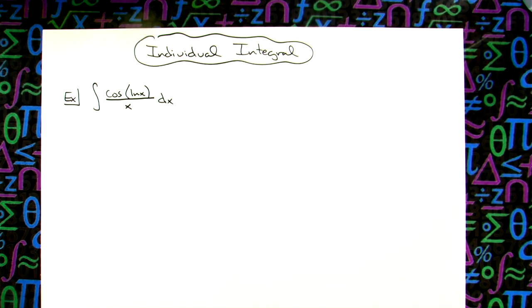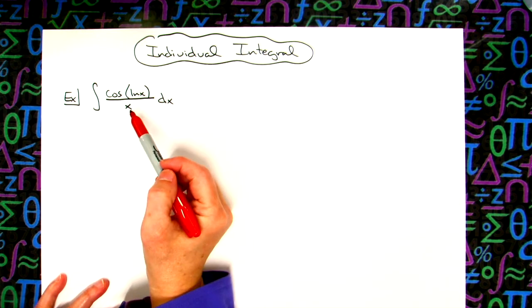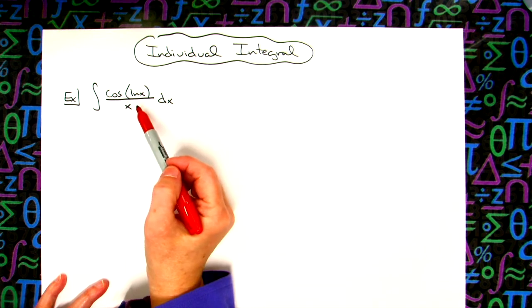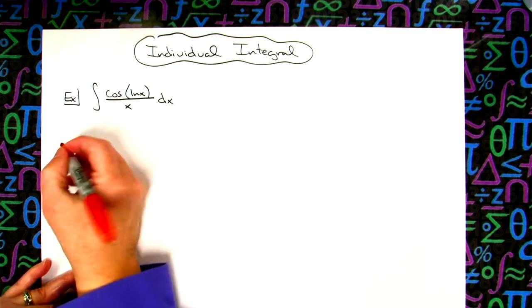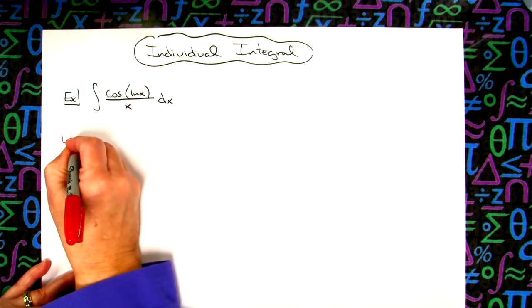All right, in this video we're going to work out an individual integral. We're going to take a look at just a straightforward u substitution. All right, our integral is going to be the integral of cosine natural log of x all over x. We're going to want to take a look at that inside part of that cosine function, and that's what we're going to let our u be.